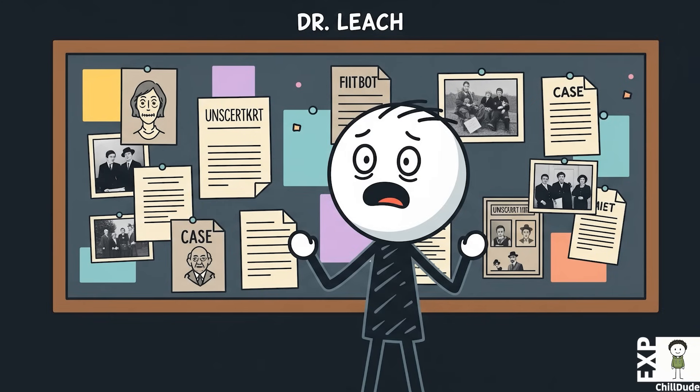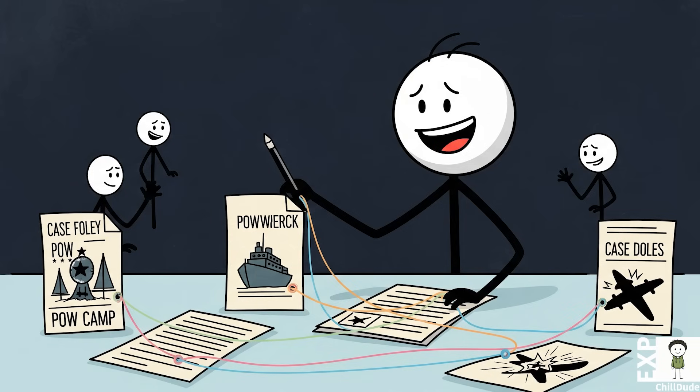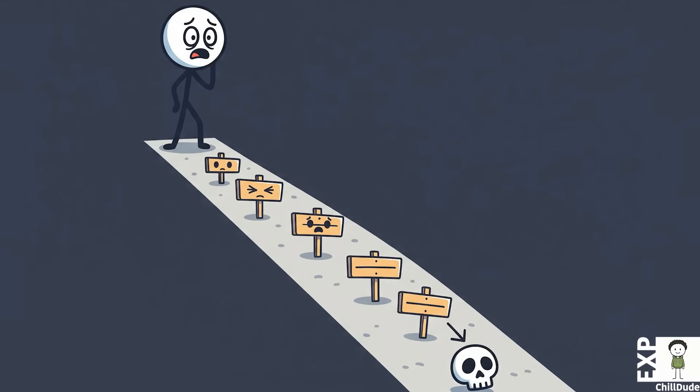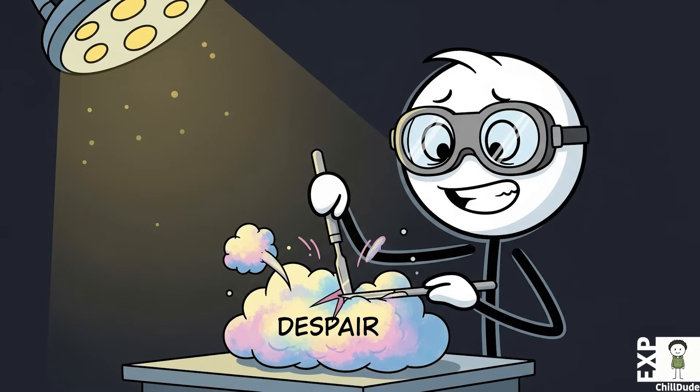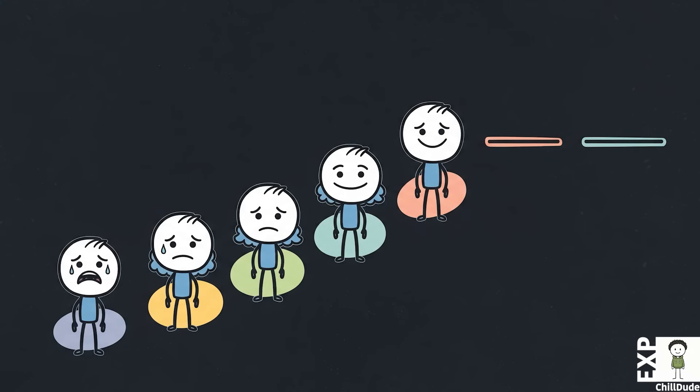It was these harrowing accounts that formed the basis of Dr. John Leach's research. By meticulously analyzing case studies from POWs, shipwreck survivors, and even plane crash victims, Leach identified a predictable, sequential pattern leading to death. He dissected the process of giving up, transforming it from a vague notion of despair into a clinical progression with five distinct stages.